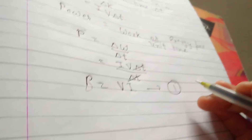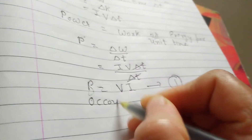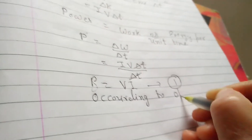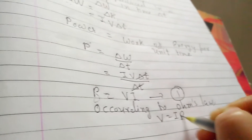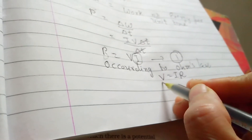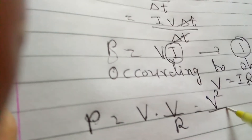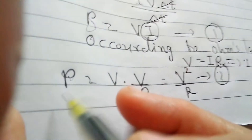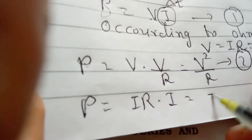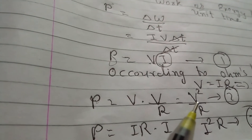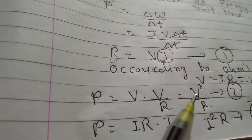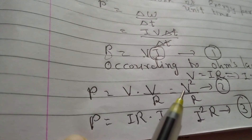This is the first equation for power. According to Ohm's law, V equals IR, so I can be written as V divided by R. Substituting the value of I, power becomes V into V/R, giving P equals V²/R. This is the second relation for power. If instead I substitute V equals IR, then the third equation for power is P equals I²R. So we have three equations: P equals VI, P equals V²/R, and P equals I²R.